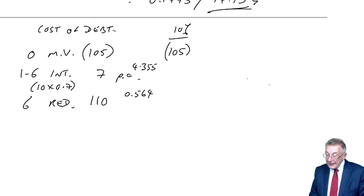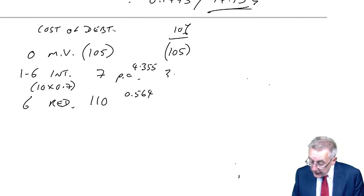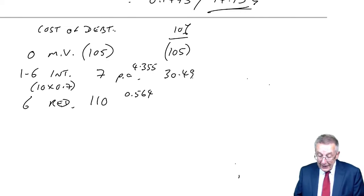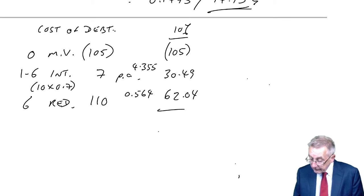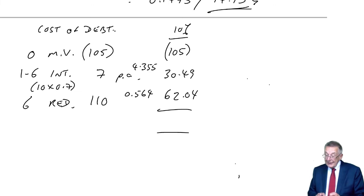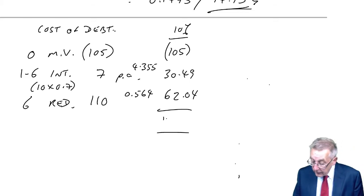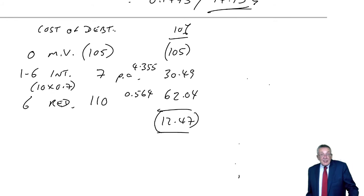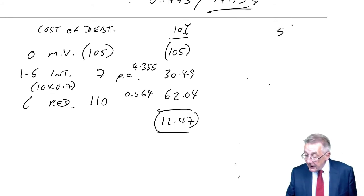So the present values, 30.49, and our net present value, negative 12.47. Well, because it's negative, the internal rate of return must be less than 10%. So I'll make my second guess at, let's say, 5%.